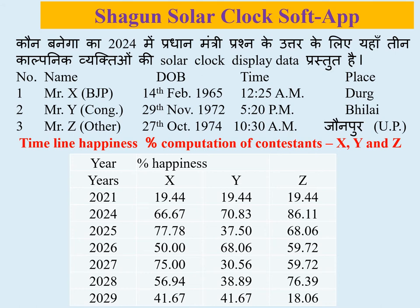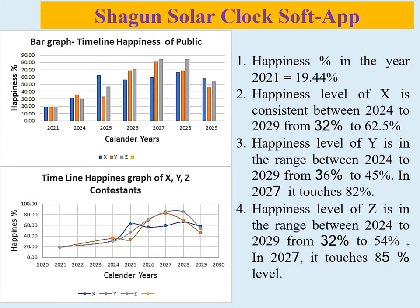जनता का अपेक्षित 50% किसी प्रधान मंत्री के कार्यकाल में निम्नलिखित factors पर निर्भर है: natural calamities जैसे floods, storms, earthquakes, famine आदि; epidemics जैसे plague, corona आदि; economic crisis जैसे price rise in petrol, diesel, cooking gas, food grains आदि। Computer screen पर जनता का penis level का solar clock display वर्ष 2021 में 19.44% है।